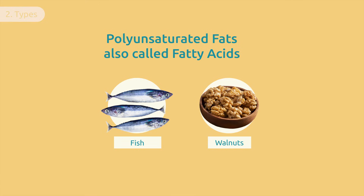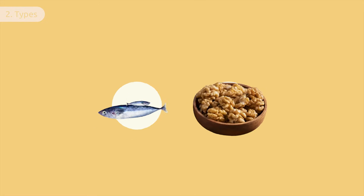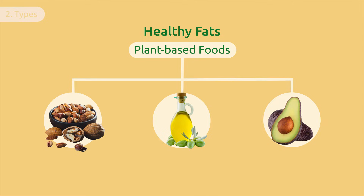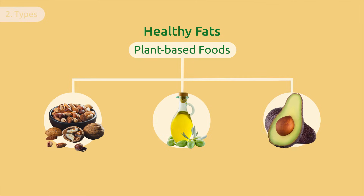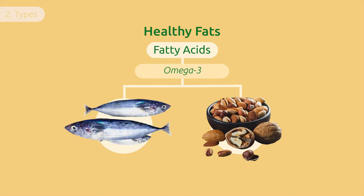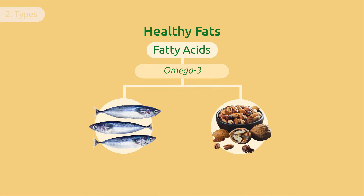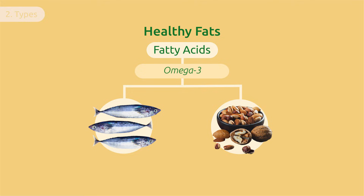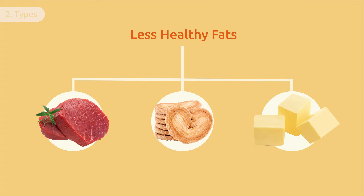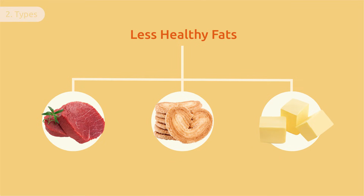or avocados. And lastly, there are polyunsaturated fats, also called fatty acids, like the omega fats. Fish or walnuts are very high in omega-3 acids. Healthy fats come from plant-based foods like nuts and some vegetable oils. They are also present in fruits like avocados. Fatty acids like omega-3 are also good for our health, even so we should control the amount of fatty acids we include in our diet.